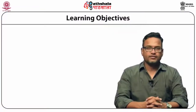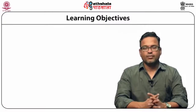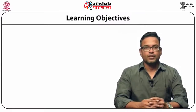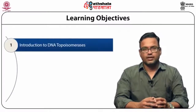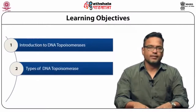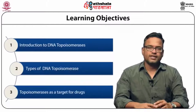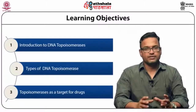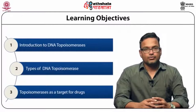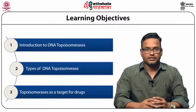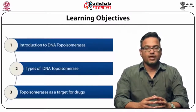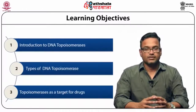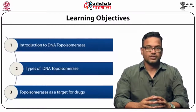The learning objective of this module is that by the end, students will understand what topoisomerases are, what their functions are, and how many types of DNA topoisomerase exist. We will also understand how topoisomerase is used as a drug target for antibiotic-resistant bacteria, and how it is used as a chemotherapy drug target in humans to take care of cancer cells.